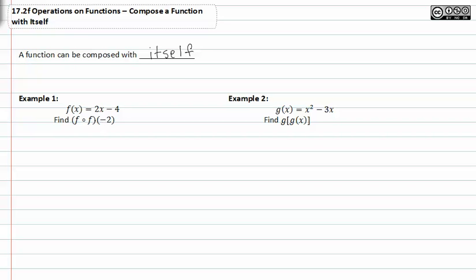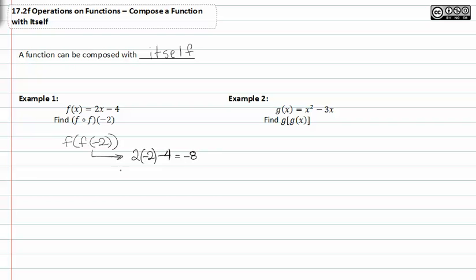In example one, we have f of f of negative two. This means we have f of negative two inside the f function. We can rewrite f of negative two as two times negative two minus four. We know this to be negative eight, so now instead of writing f of negative two, we can just put the negative eight in there.